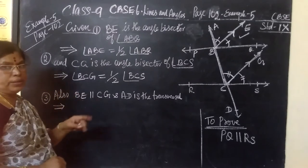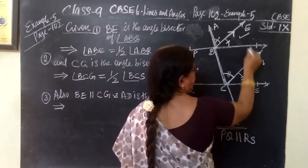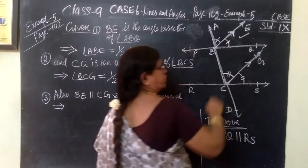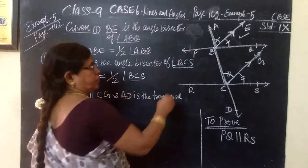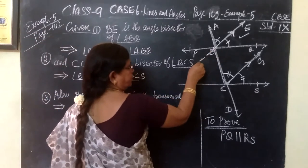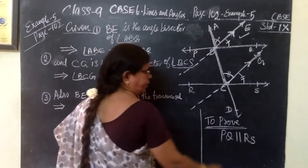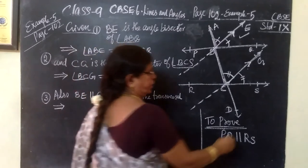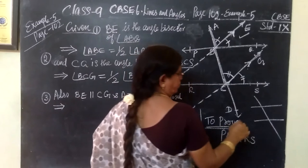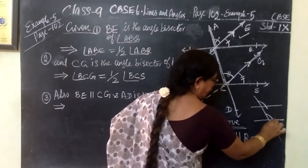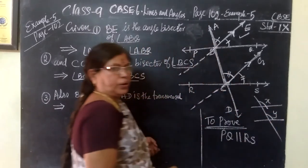So two steps we have written, and one more step: BE is parallel to CG, as given in the question. For parallel lines, you just extend and see. Which is the transversal? AD is the transversal, and immediately you know corresponding angles are equal.